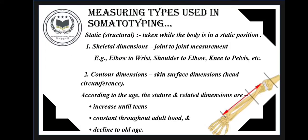What are the measuring types used in somatotyping? The most common type used is static — that is, structural — measurement, which is taken while the body is in a static or straight position. The first is skeletal dimension, which is taken as joint-to-joint measurement, for example: elbow to wrist, shoulder to elbow, knee to pelvis, etc. The second is contour dimension, in which skin surface dimensions are taken, such as head circumference.